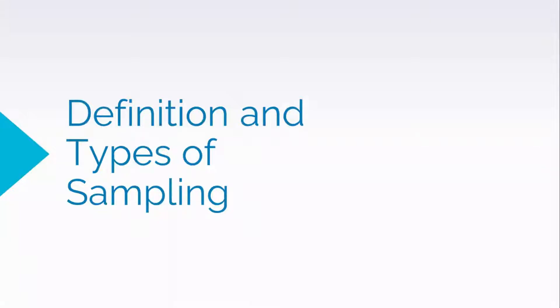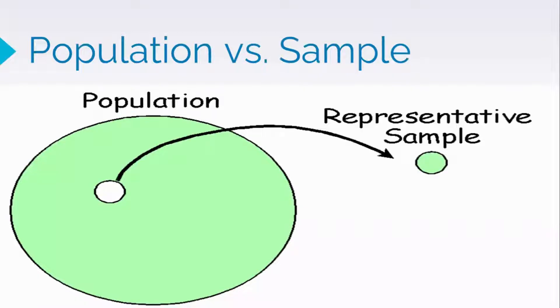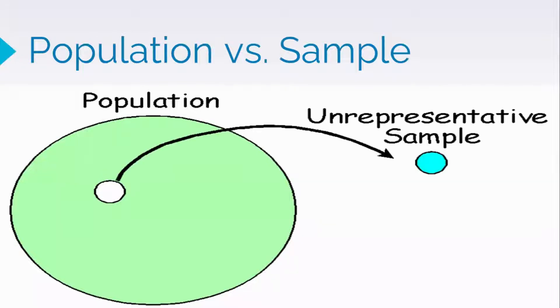Definition and Types of Sampling. A population is the totality of all values of a particular characteristic for a specified group of subjects that are of interest to the researcher. We may call the elements in the population units or subjects. A sample is a finite portion of a population that will be used or investigated in the study. Sampling is the process of choosing a representative portion of a population.